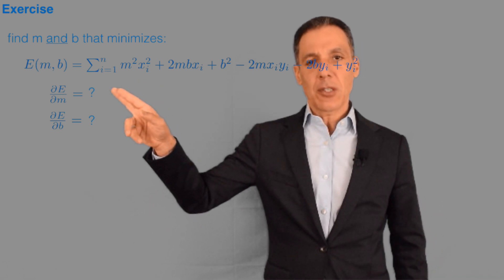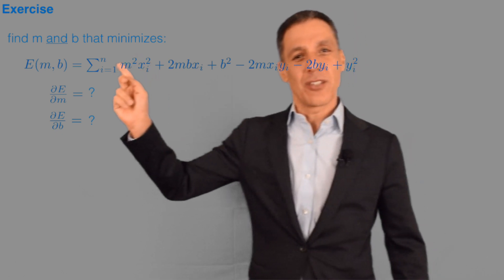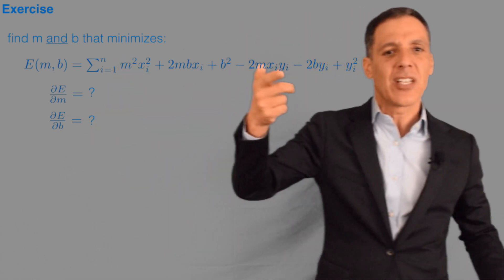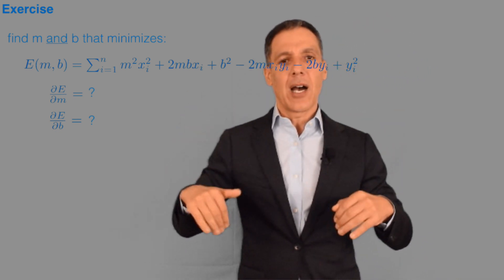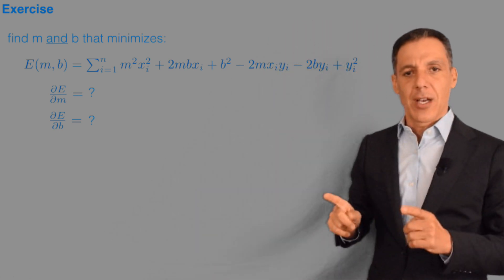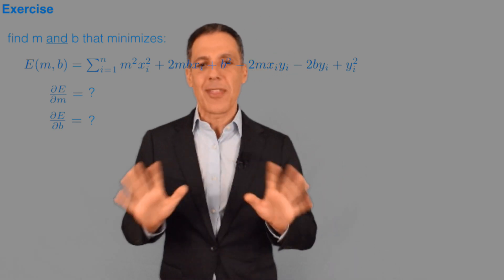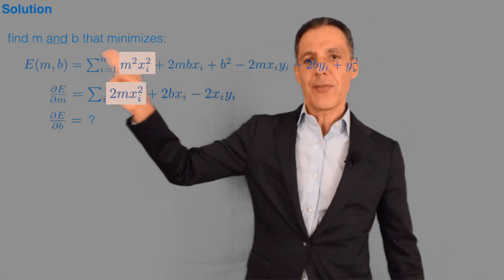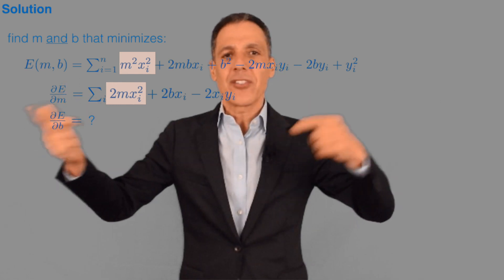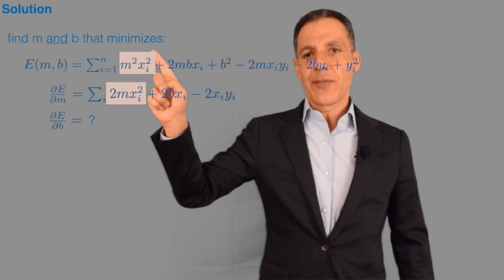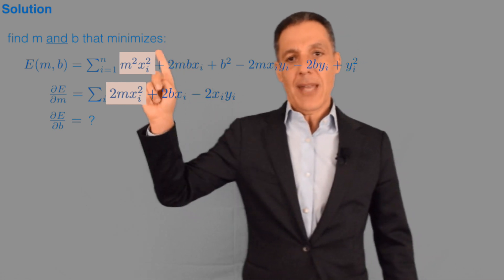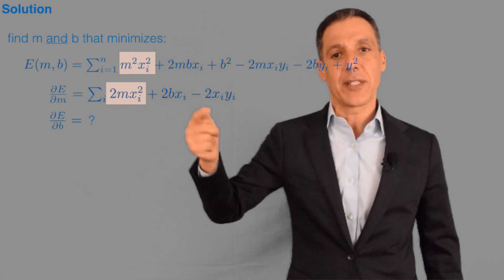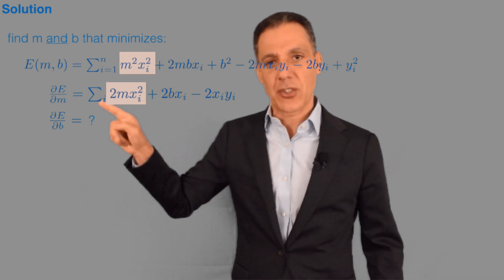Pause the video and compute the partial derivatives. Remember that the derivative comes inside the summation — the derivative of a sum is the sum of the derivatives. So all you have to do is differentiate each term, and you're still summing over all x_i and y_i terms. Let's compute the partial derivative with respect to m. The derivative of m² times x_i² — since x_i² is a constant — gives 2m·x_i². The power comes down and the constant sticks around.